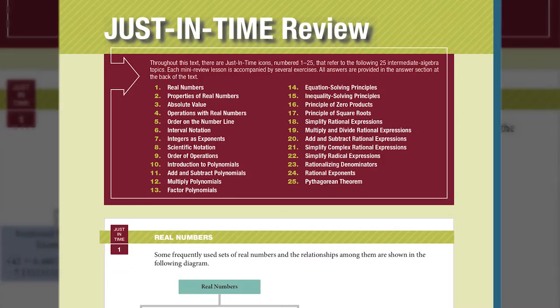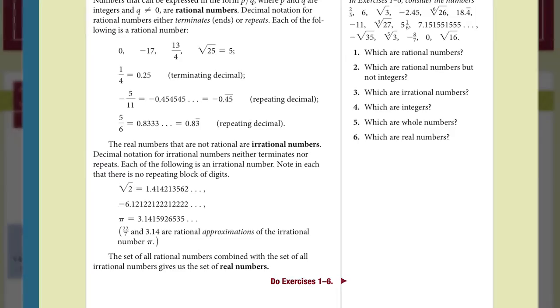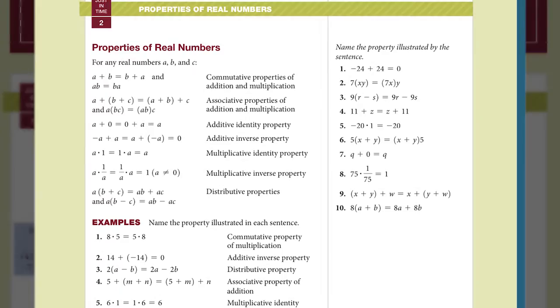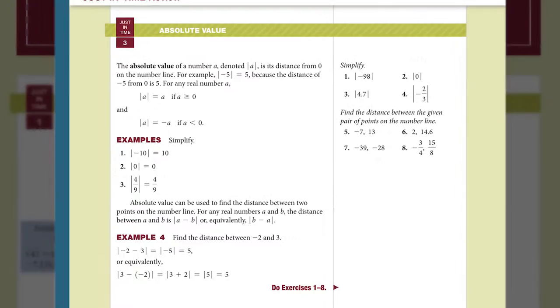For these reasons, we have created a new just-in-time review feature that replaces and shortens the coverage of the topics included in the original Chapter R. Review of prerequisite algebra topics is now presented when students need it most. A set of 25 numbered short review topics creates an efficient review of intermediate algebra topics. This feature is placed at the back of the text.